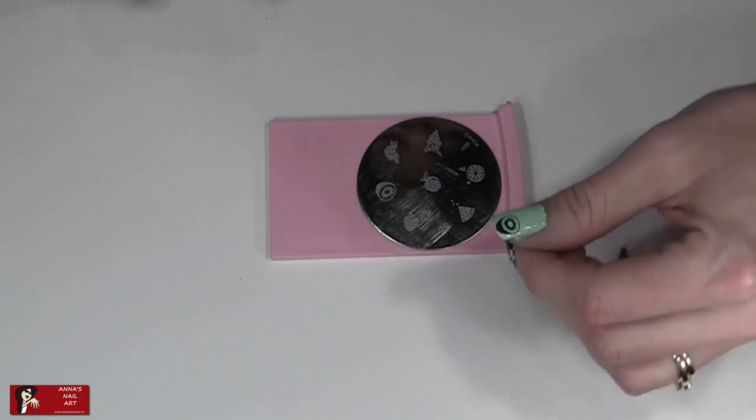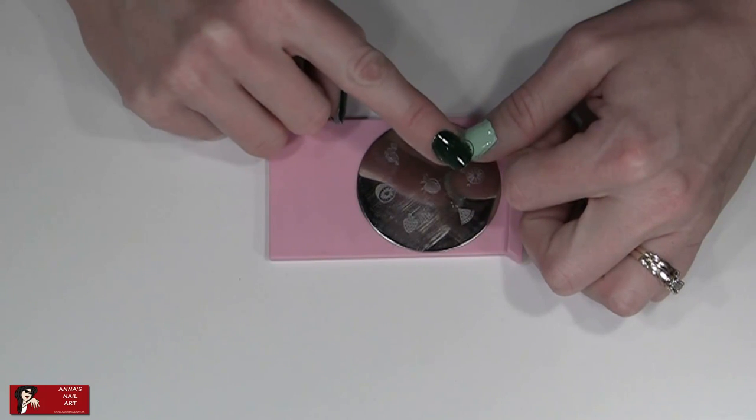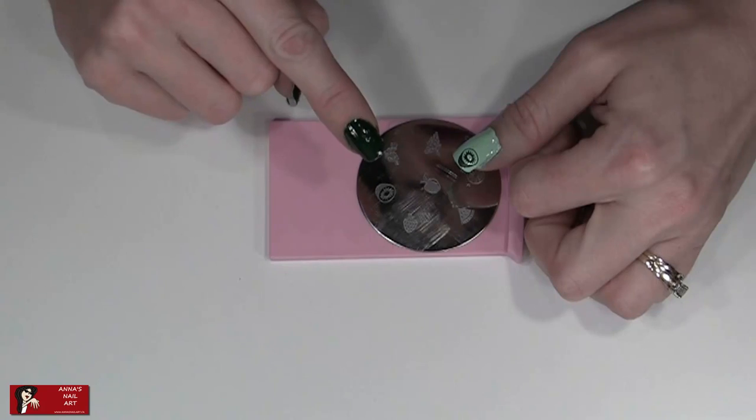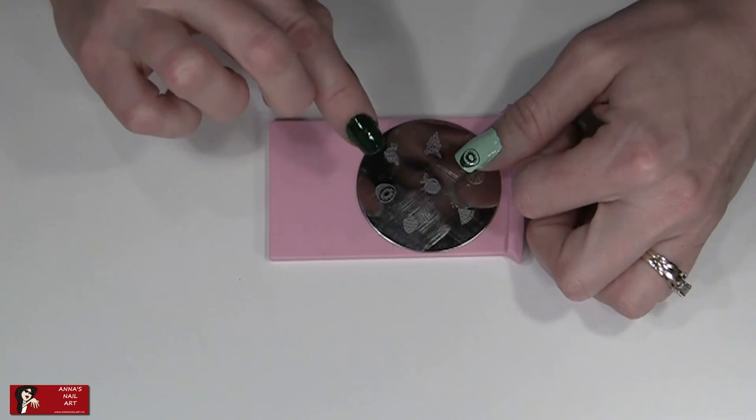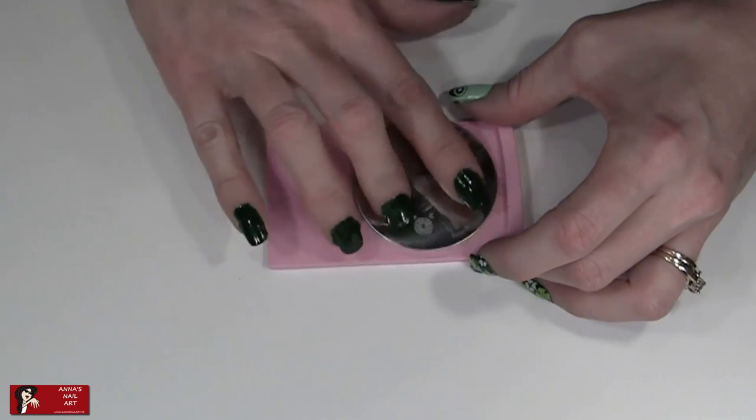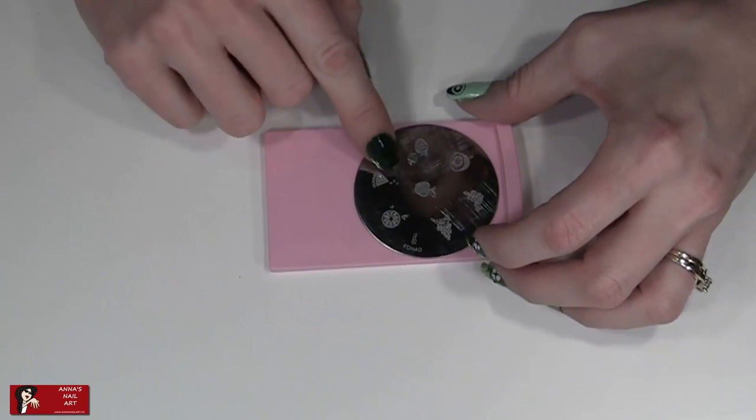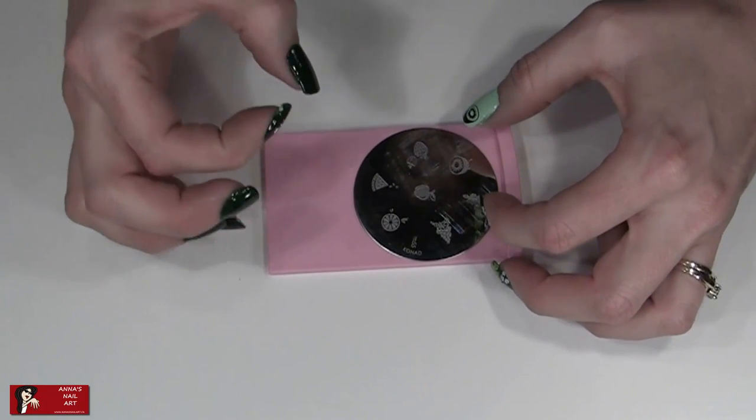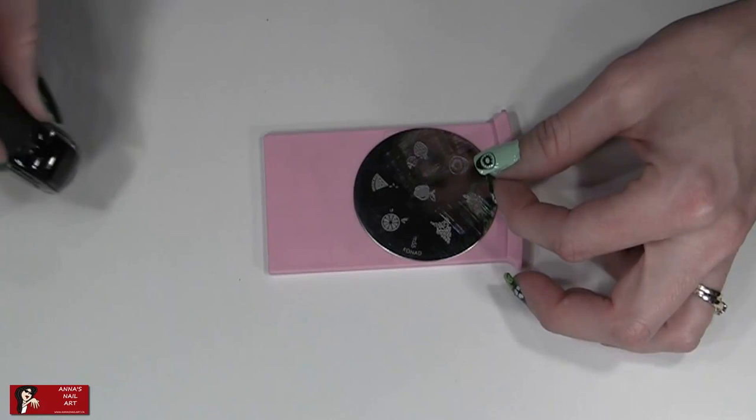So for the next step, what we need to do is we need to fill this in. Now you could use a Miji pen, I've done that before, but for time's sake, let's stick with stamping so we can get this done rather quickly. So on the same plate, the M55 fruit plate, I notice that the apple is a nice full solid design.